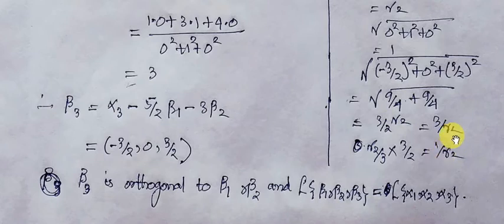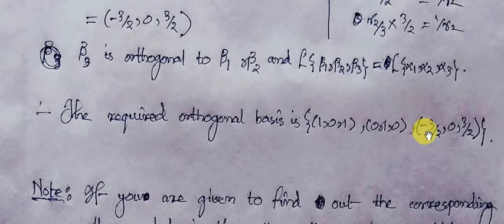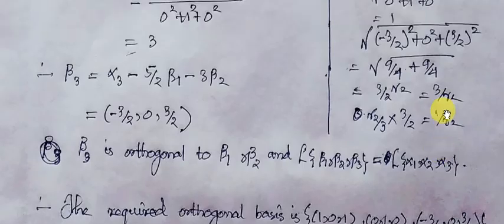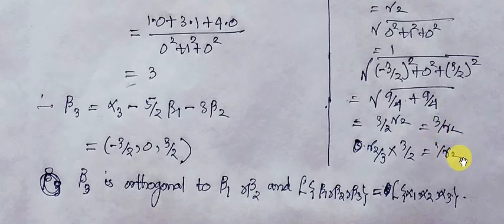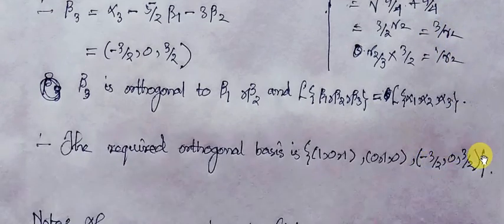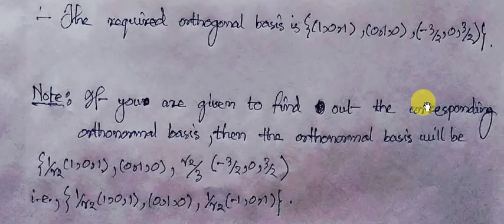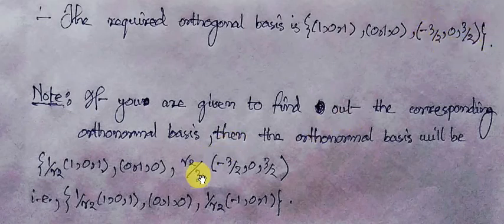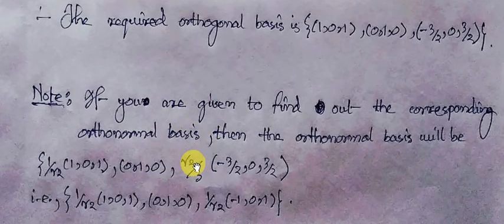Sorry — the norm of the vector [-3/2, 0, 3/2] is not 1/root 2. After calculation, the norm of this vector is 3/root 2. So we have divided this vector by 3/root 2, which gives us a factor of root 2 over 3.